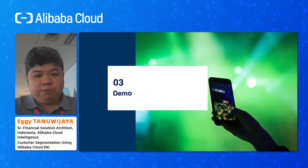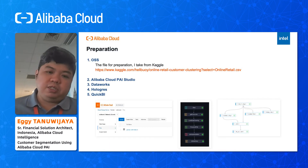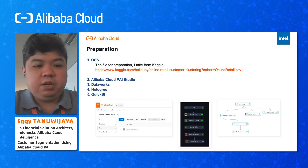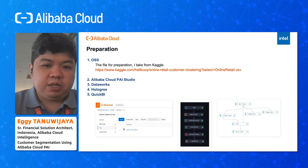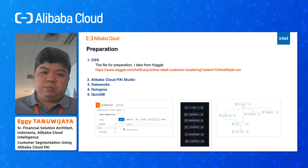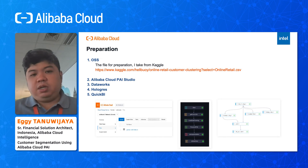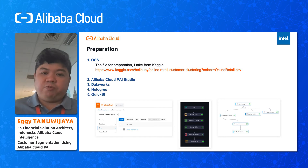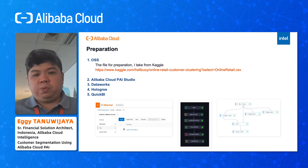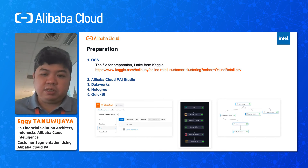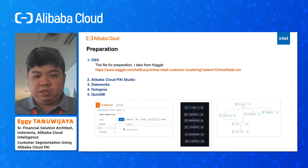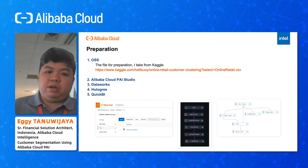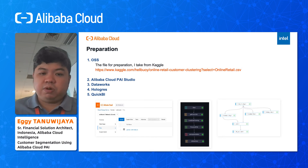PAI EAS can serve this model and we can call the service using an API. For the demo in part three, we need to prepare some data. I created an OSS bucket and the file I got from Kaggle — you can see it is related to online retail customer clustering, the Online Retail CSV. We need to prepare Alibaba Cloud PAI Studio, DataWorks, Hologres, and QuickBI.